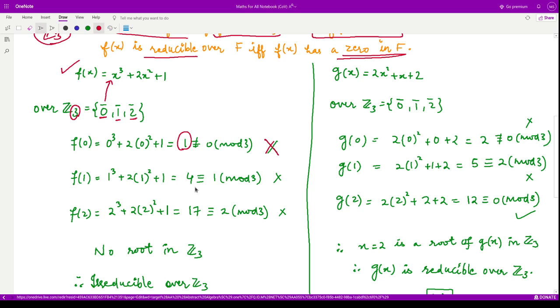Again, f(1) comes out to be 4. When you divide this 4 by 3, you will get the remainder as 1, so it is 1 mod 3. This is also not a root because now we are in Z₃, so we have to apply this operation of mod 3.